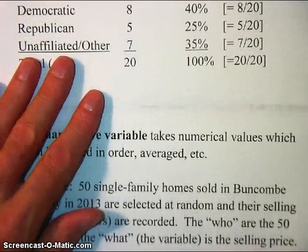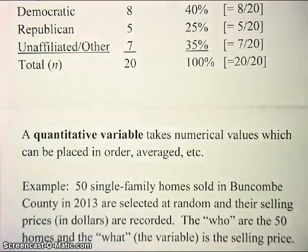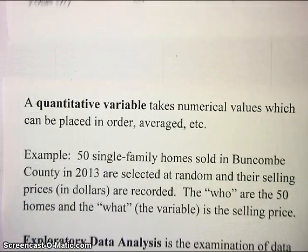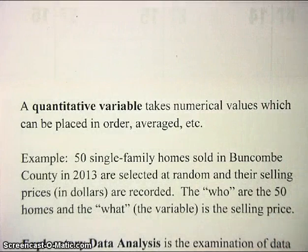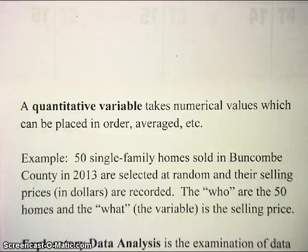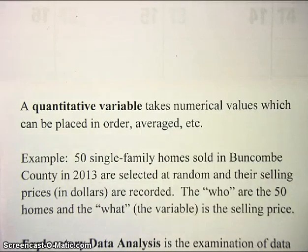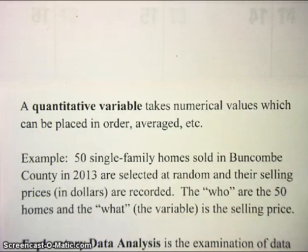On the other hand, we have quantitative variables. Quantitative variables take numerical values which can be placed in order; you can average them and perform arithmetic operations on them. An example would be 50 single-family homes sold in Buncombe County in 2013, selected at random, with their selling prices in dollars recorded. The variable is the selling price — a quantitative variable. It's a number; you could total up all the selling prices and average them, rank them in order, and so on.